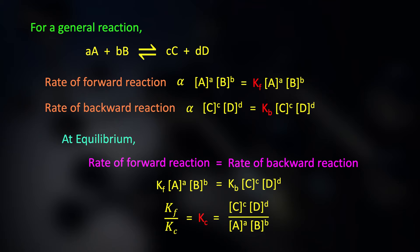This gives us the first equation to compare. Kf divided by Kc is the equilibrium constant. The equilibrium constant Kc is defined as the concentration of products divided by the concentration of reactants.